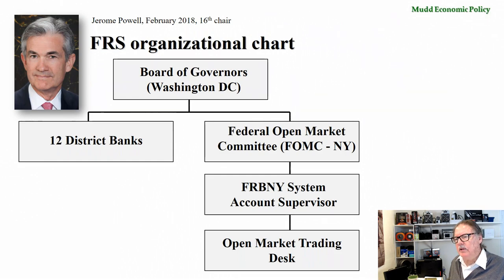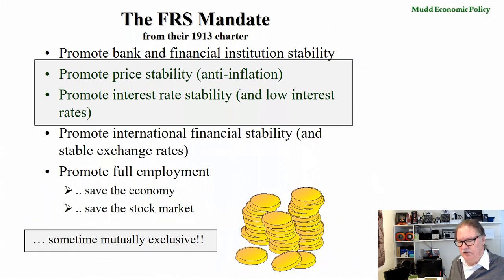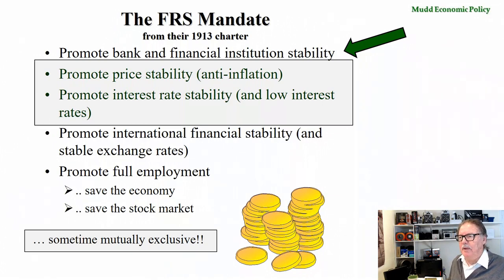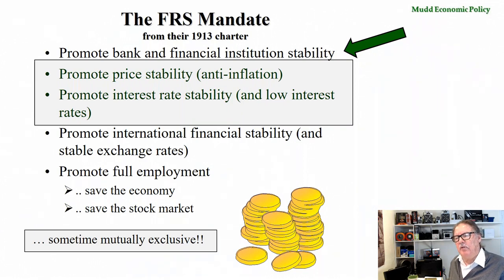We can begin by discussing the Federal Reserve mandate — what they're supposed to do based upon their 1913 charter and how, over the years, that has been expanded. Their primary job and the reason they were created was to promote bank and financial institution stability. They need to keep the banks operating. Prior to their foundation in 1913, bank failures were a significant problem in the United States, and the thrust to create a central bank came from the recession of 1907, where there were a large number of bank failures.